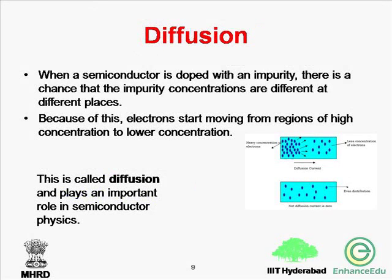The process of infusing impurities in a semiconductor to increase its charge carrier concentration and therefore increase conductivity is the process of doping. Because of diffusion, electrons start moving from the region of high concentration to the region of low concentration. This process of diffusion plays an important role in semiconductor physics.